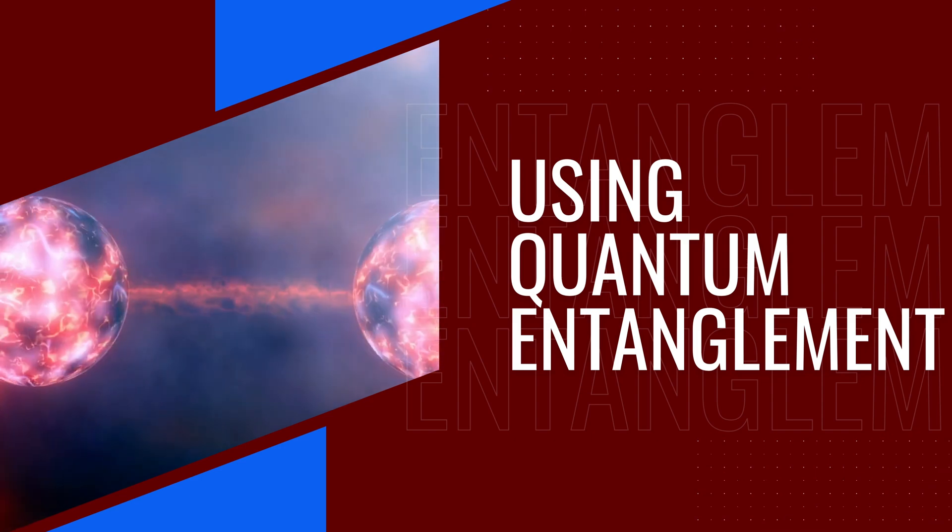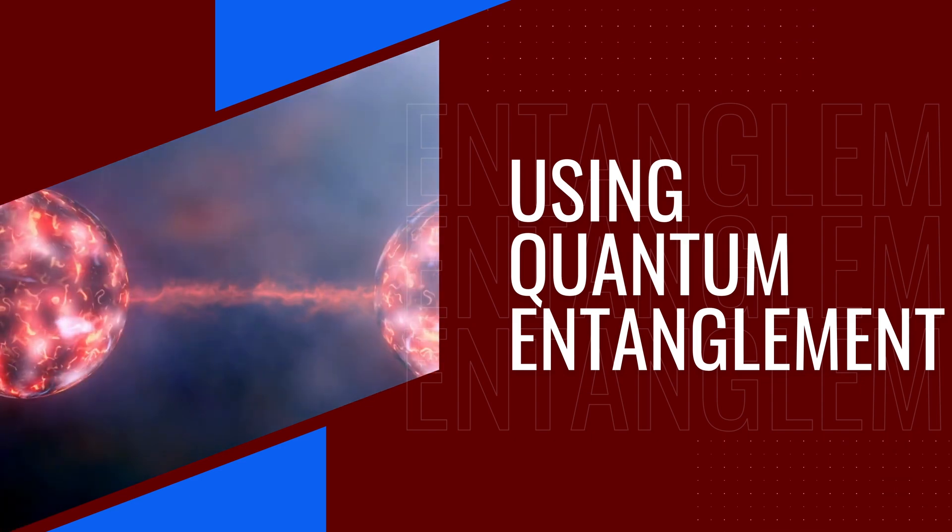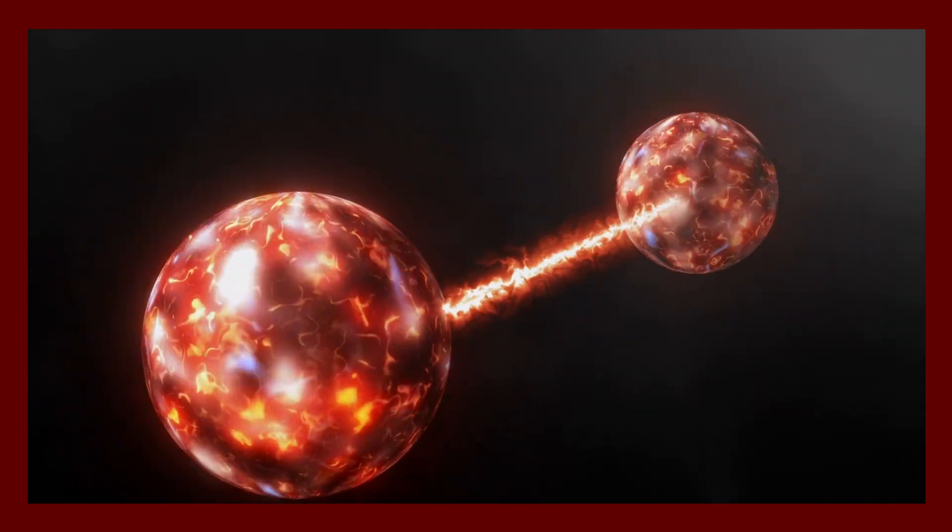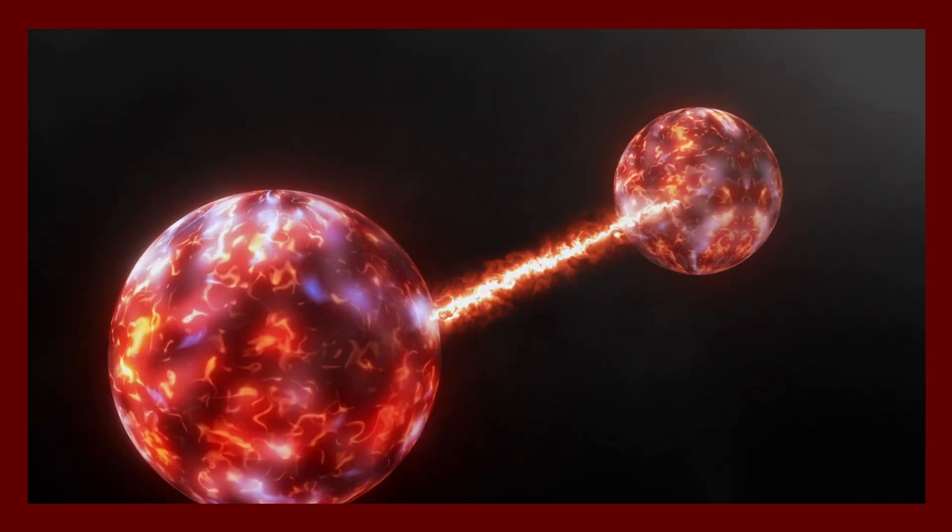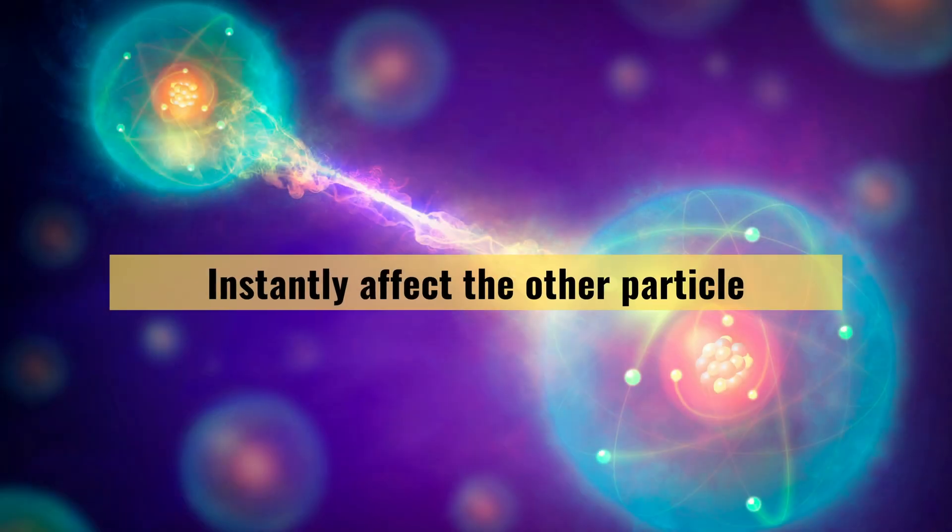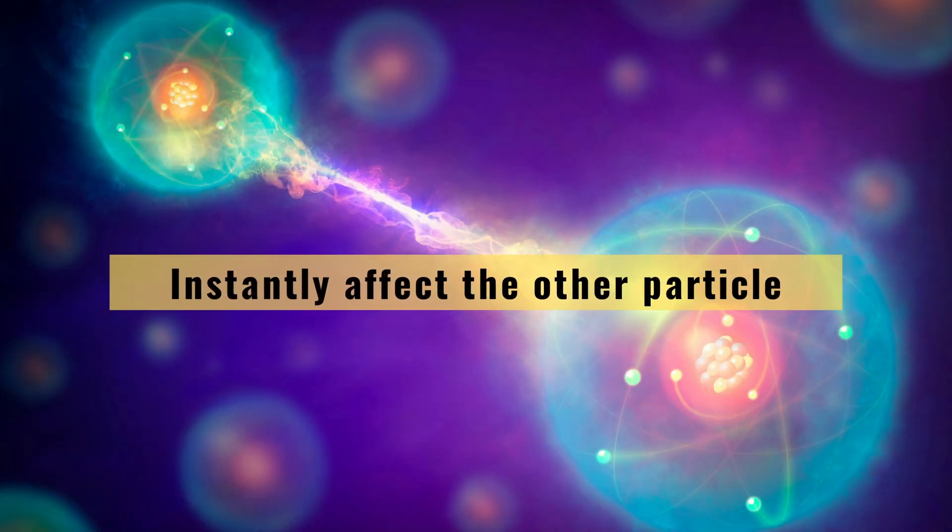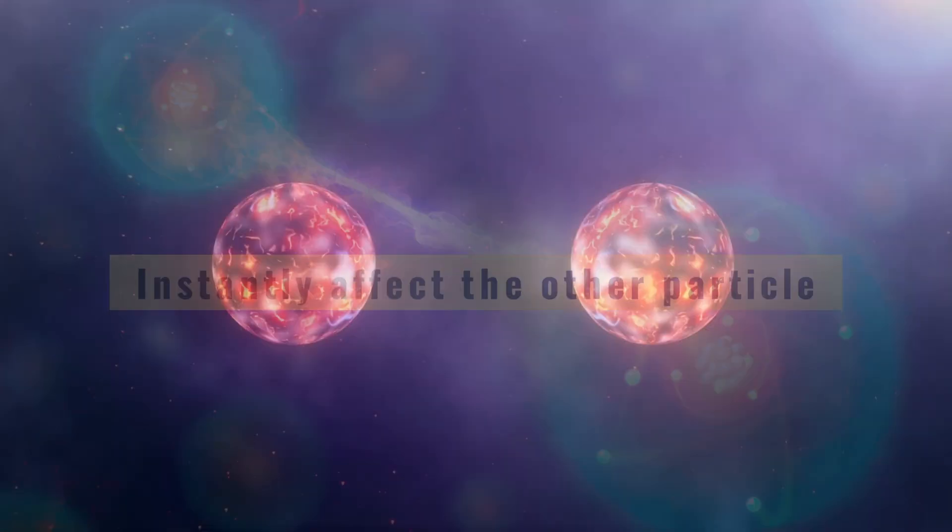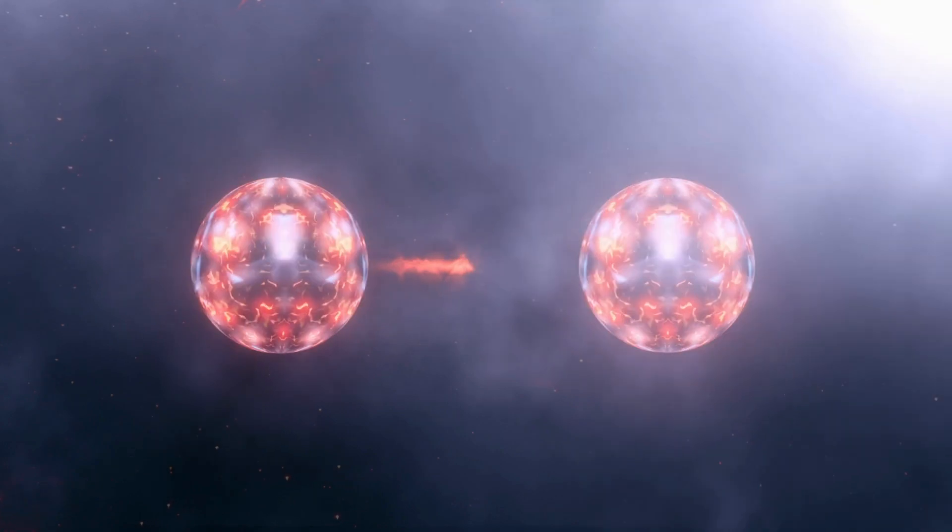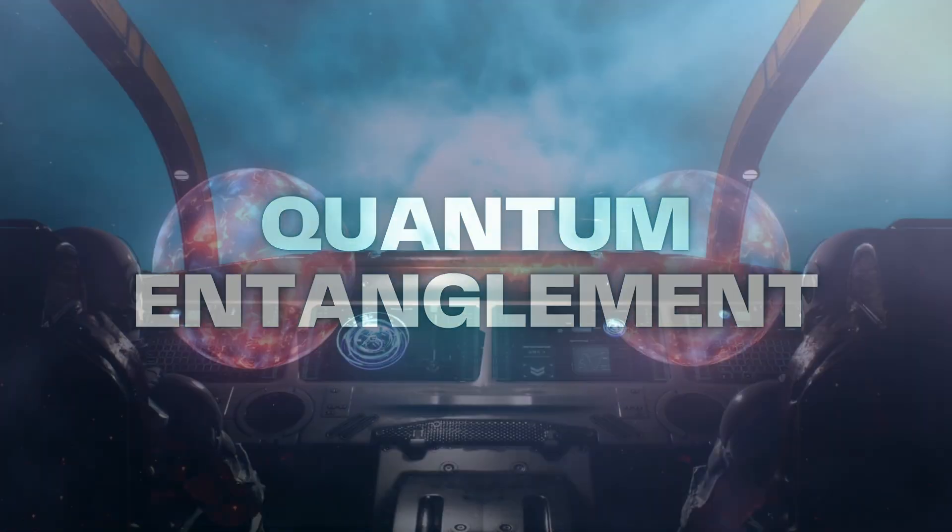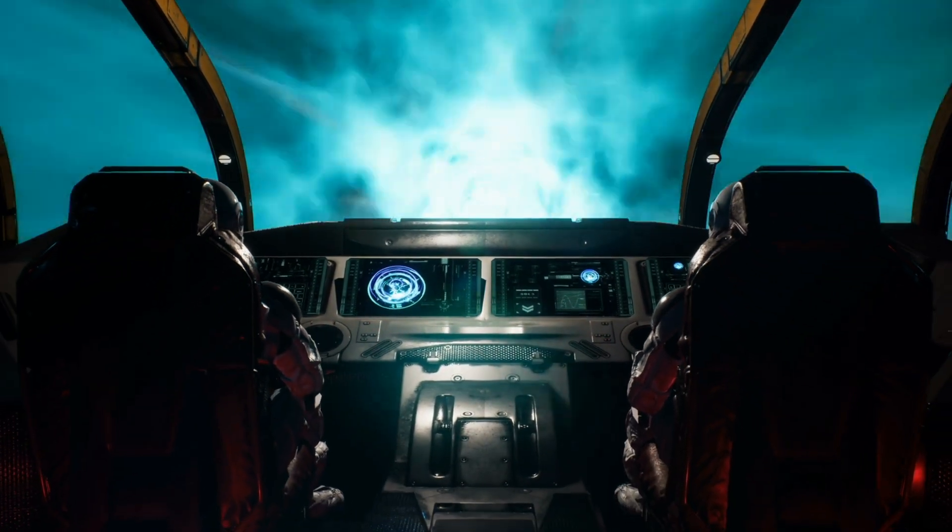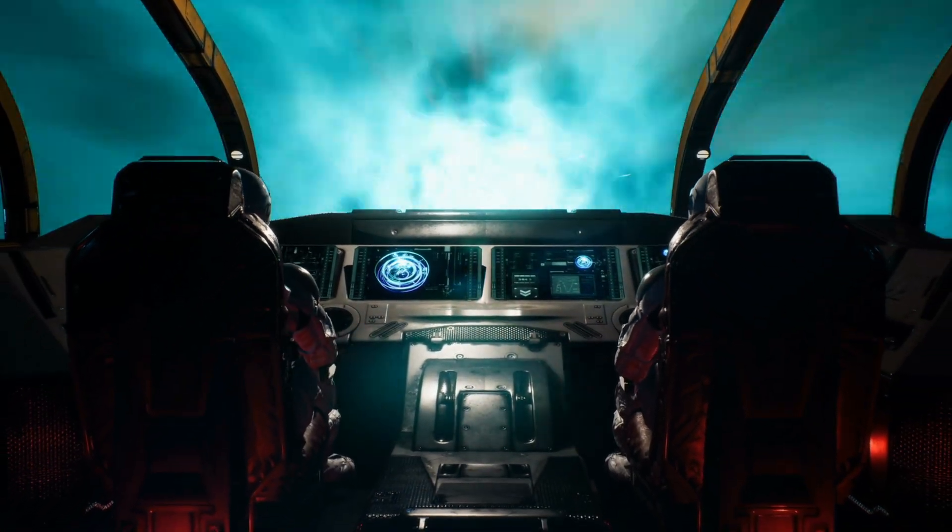The first method to create a wormhole involves the concept of quantum entanglement. In quantum physics, particles can become entangled and share a correlated state. If we can entangle two particles and then separate them, any change made to one particle will instantly affect the other particle, regardless of the distance between them. This phenomenon is known as quantum entanglement, and some scientists believe it could be used to create a bridge between two points in space-time.